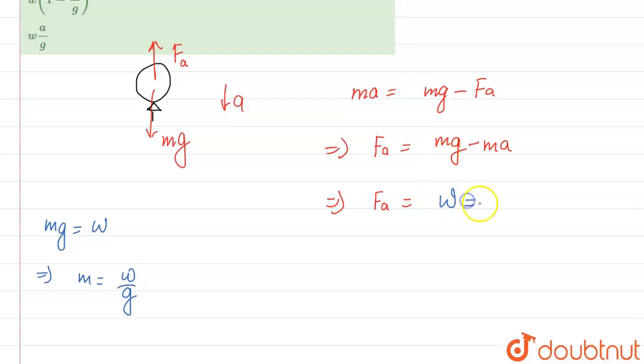mg is equal to W and m is equal to W upon g. This is a. So if you see over here, Fa, force due to air resistance, will come out to be W(1 - a/g).